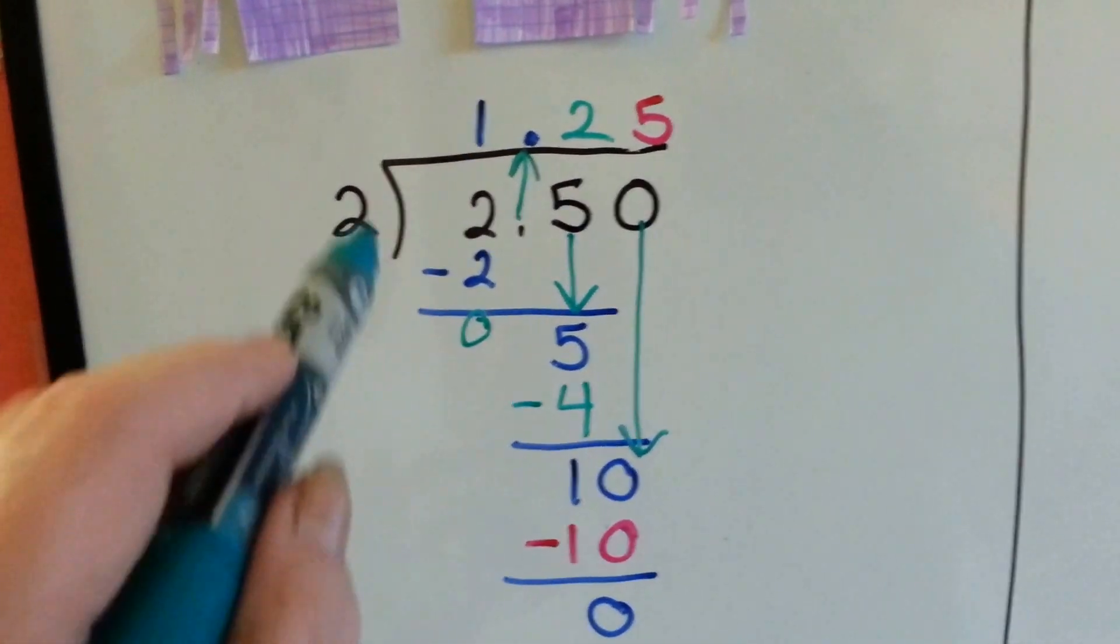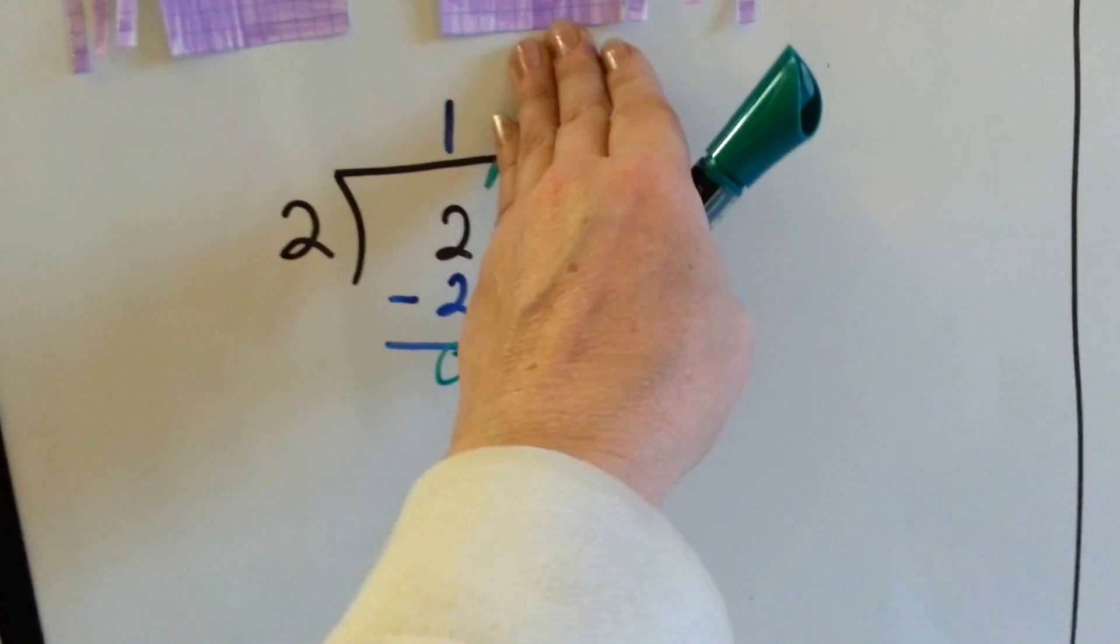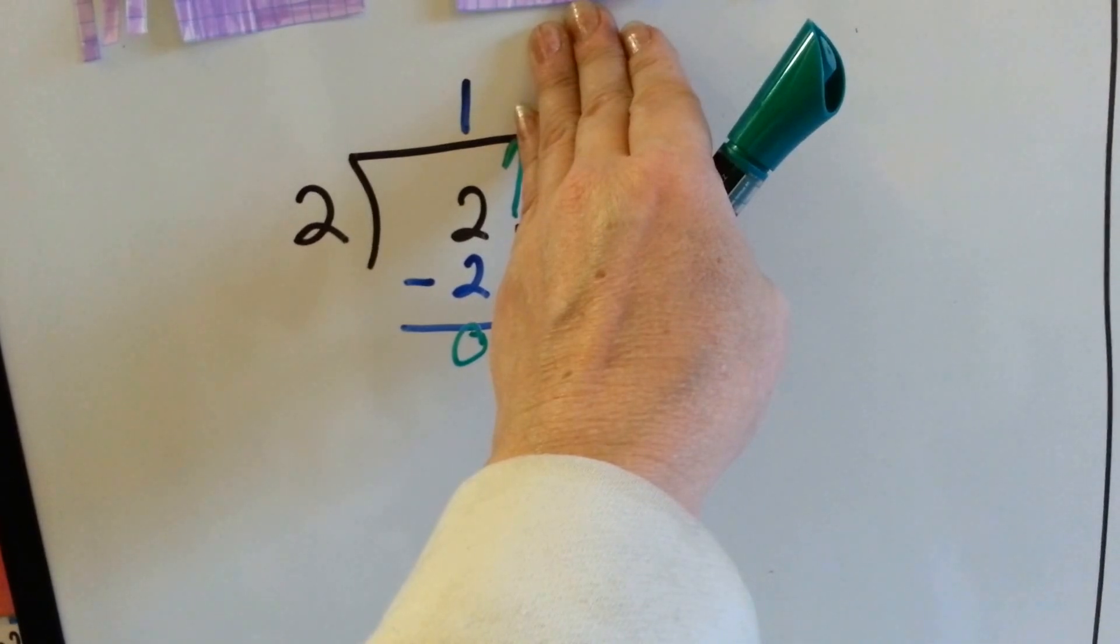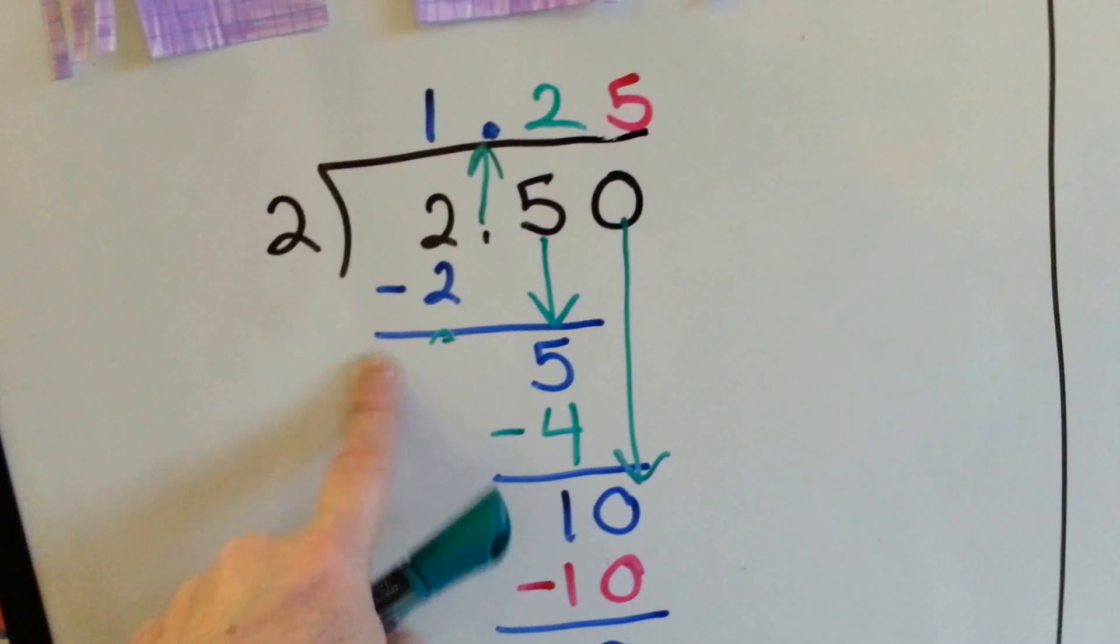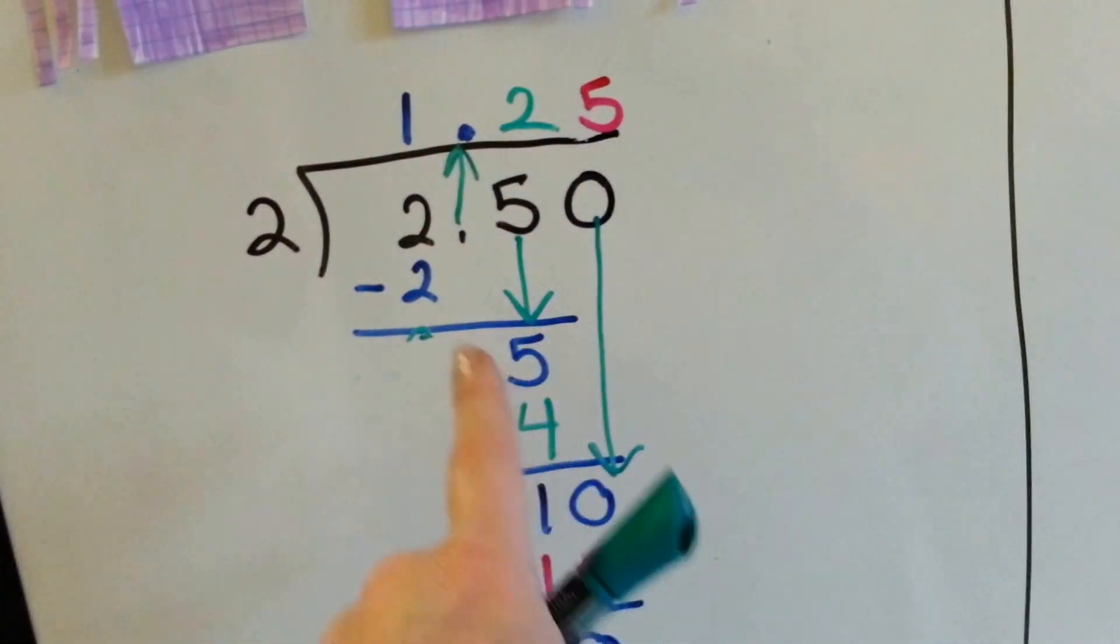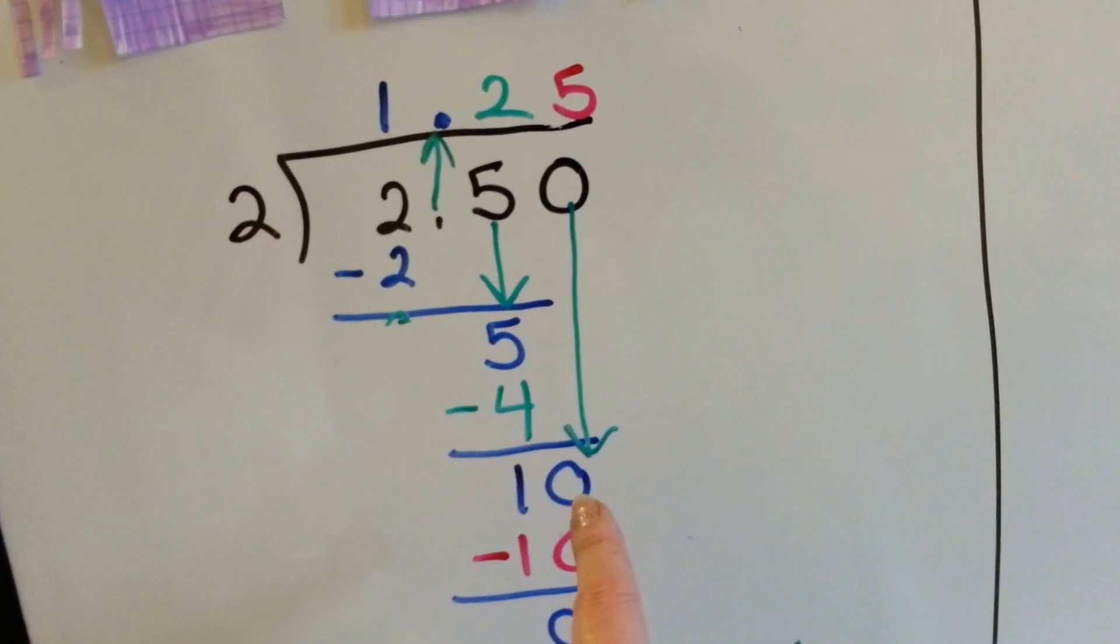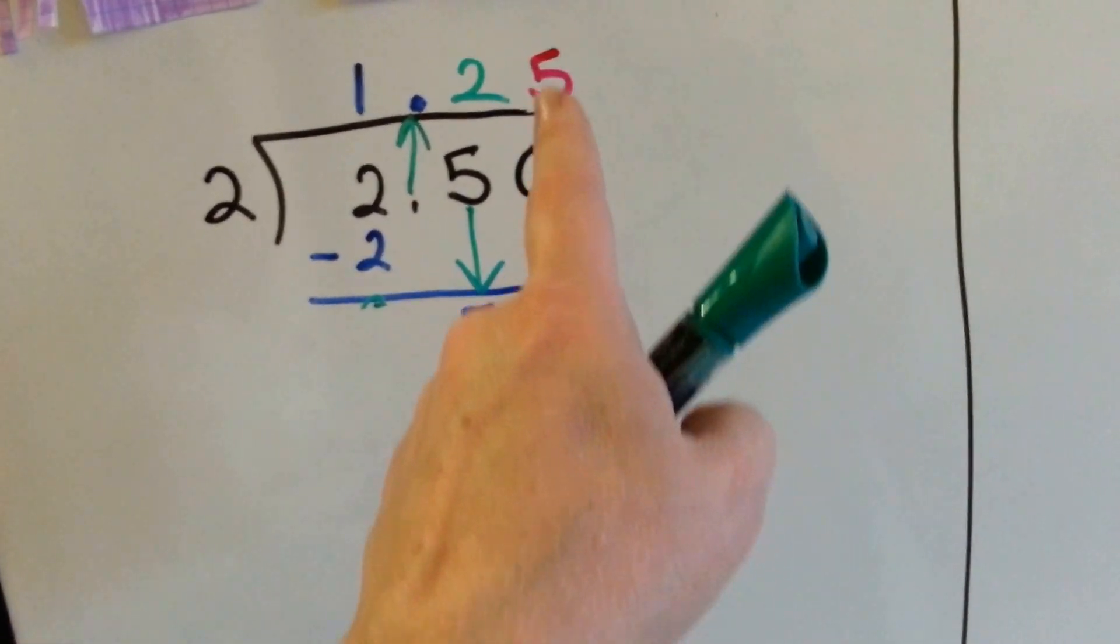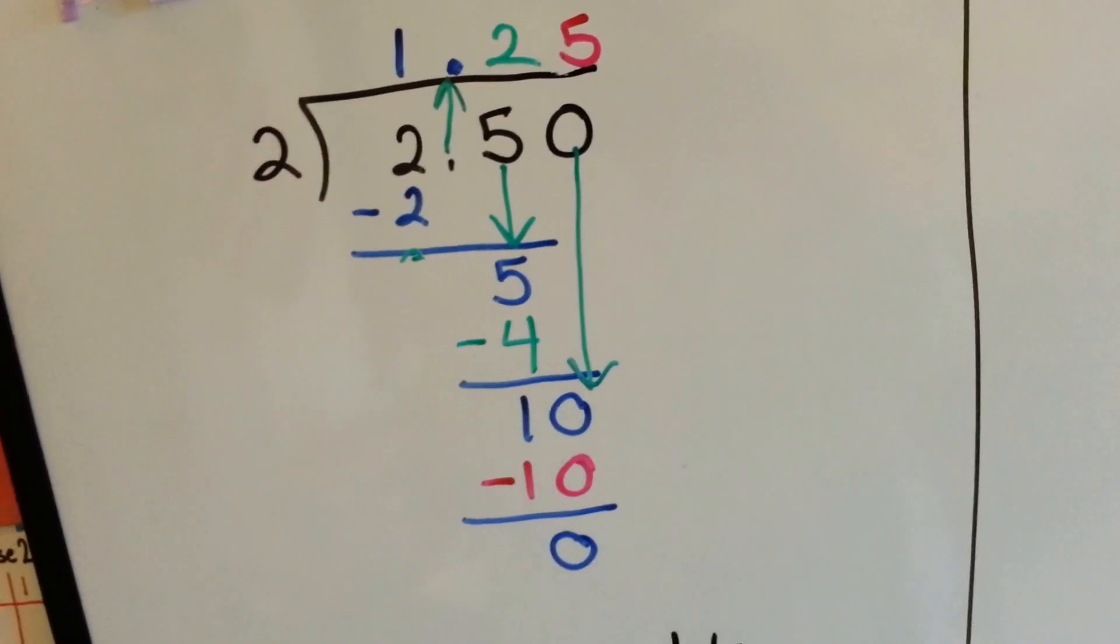So to do it the long division way, we ask ourselves how many times can 2 fit into 2, and it's 1. So we put our 1 directly above the 2, and we do our 2 times 1, which is 2, and we do our subtraction, and it's 0. And now it's the 5's turn to come down. 2 goes into 5, 2 times, we put the 2 up here above the 5. 2 times 2 is 4, we do our subtraction and get 1, and now it's the 0's turn to come down. 2 goes into 10, 5 times. We multiply it by the 5 and get 10, and have a 0 remainder.